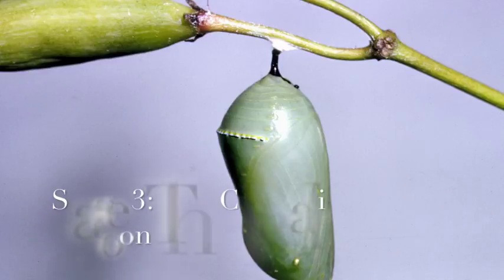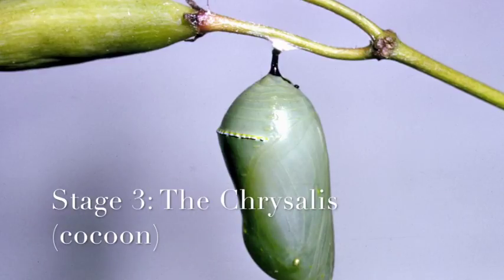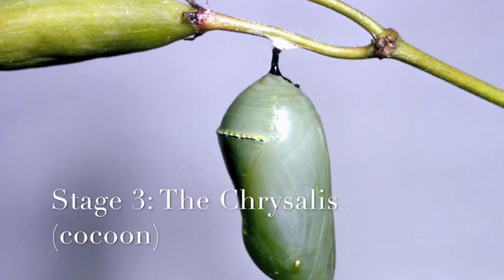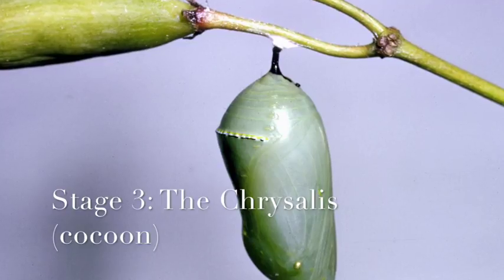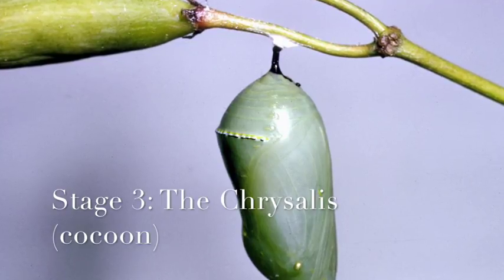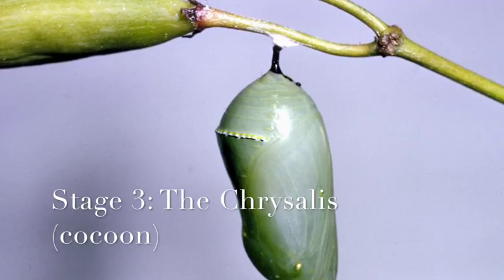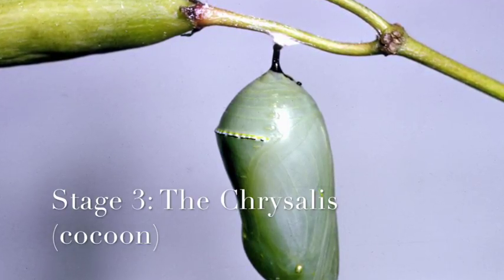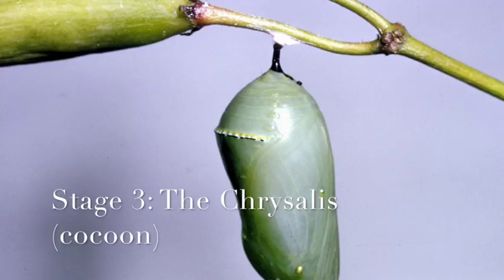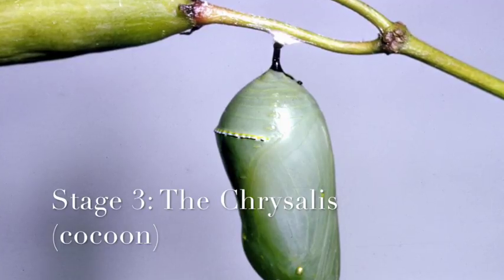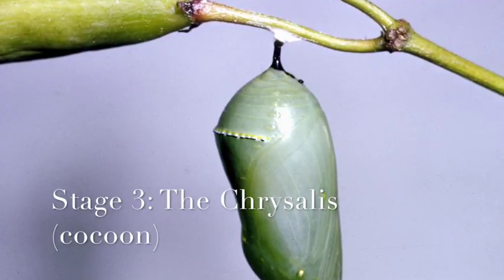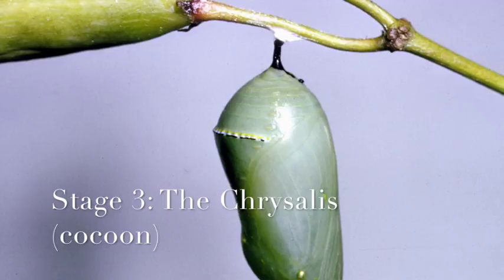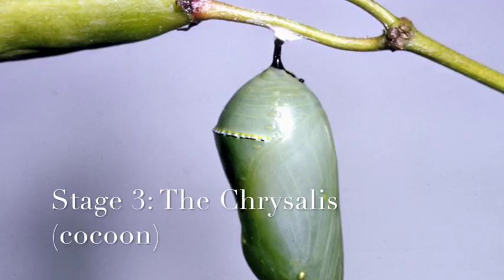The next stage is the chrysalis stage, which is another word for cocoon. Over time the caterpillar sheds its skin many times, and the last time it sheds its skin it attaches itself to the bottom of a twig. It makes a cocoon that looks like a leaf to protect itself from predators.